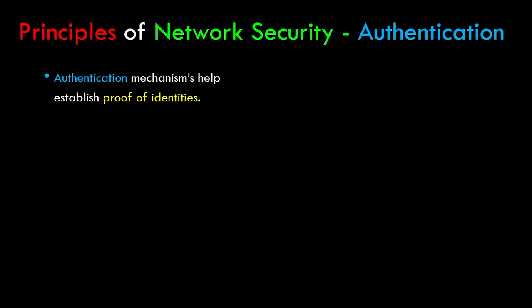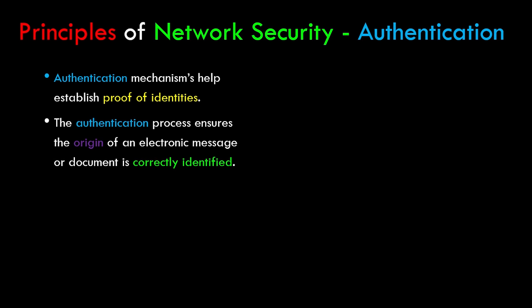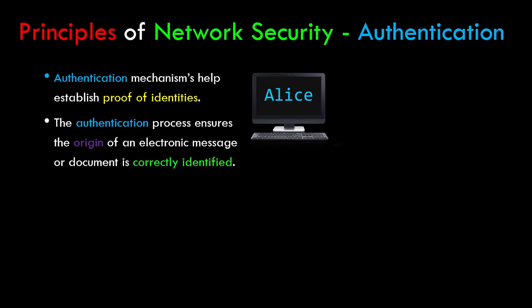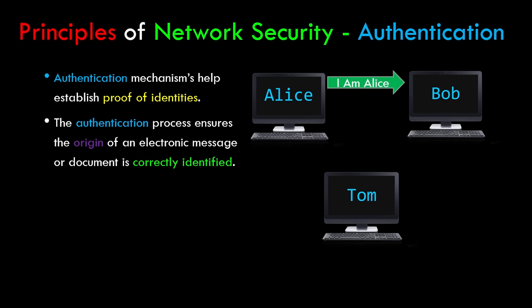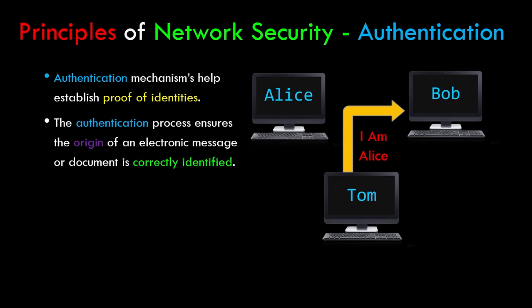Now let's have a look at the principle of authentication. Authentication mechanism helps establish proof of identities and ensures that the origin of an electronic message or document is correctly identified. For example, if Alice and Bob want to have a conversation but Tom disguises himself as Alice and talks to Bob, due to lack of authentication Bob has no idea that he is talking to Tom. In this case the principle of authentication is defeated.